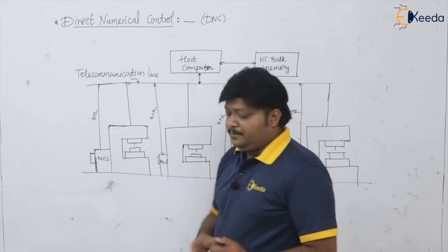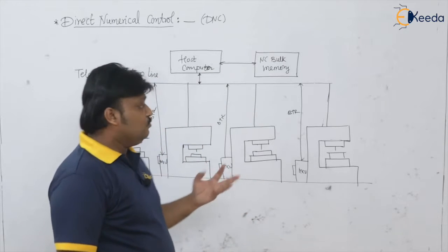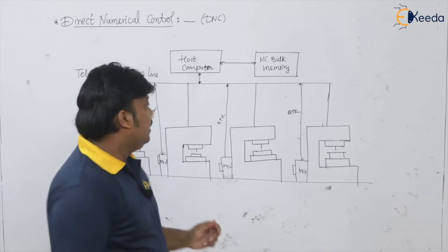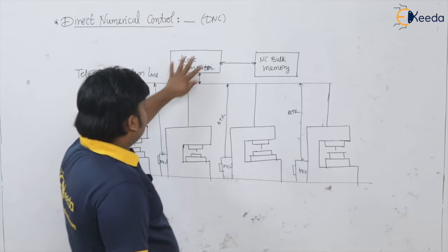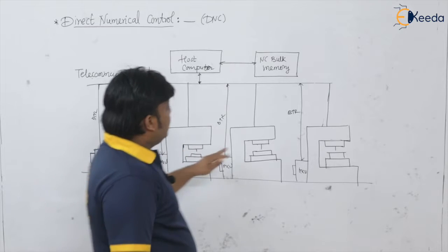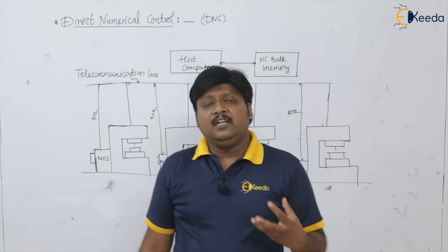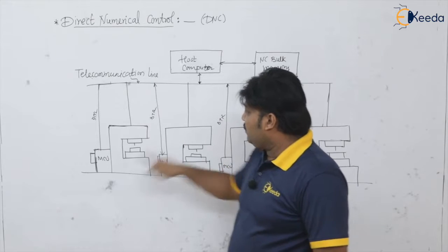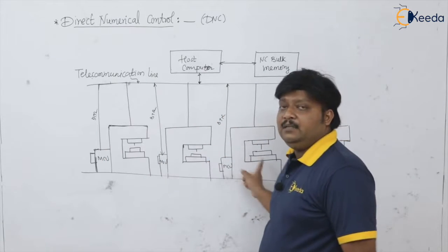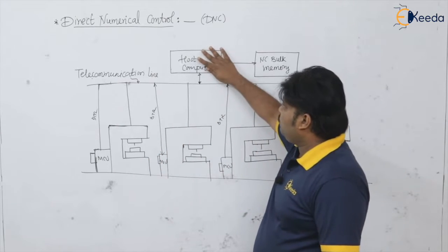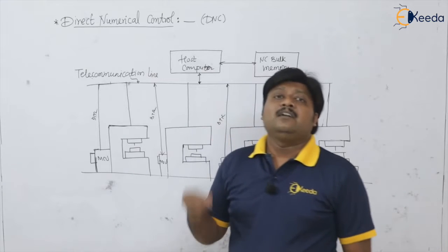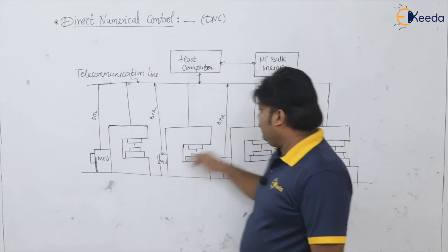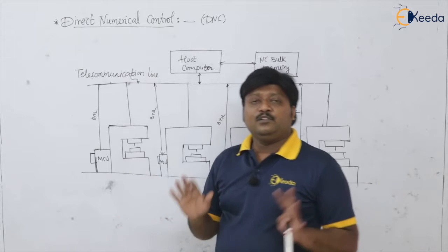Different machine tools on the floor produce different workpieces in different quantities. The host computer first downloads the required program for the corresponding component to the mini computer or machine control unit of every machine. It downloads whatever program is required corresponding to the required part with the required quantity.